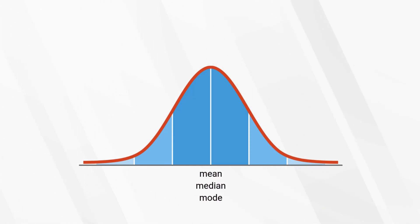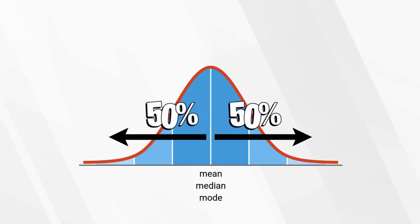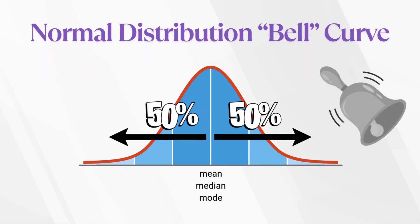So now that you know how spread out scores can be, what does that look like when we graph it? When data is spread out evenly, or symmetrically, with about 50% of the scores on each side of the mean, it forms something very familiar: the normal distribution curve. Also known as the bell curve. Because, well, it looks like a bell.